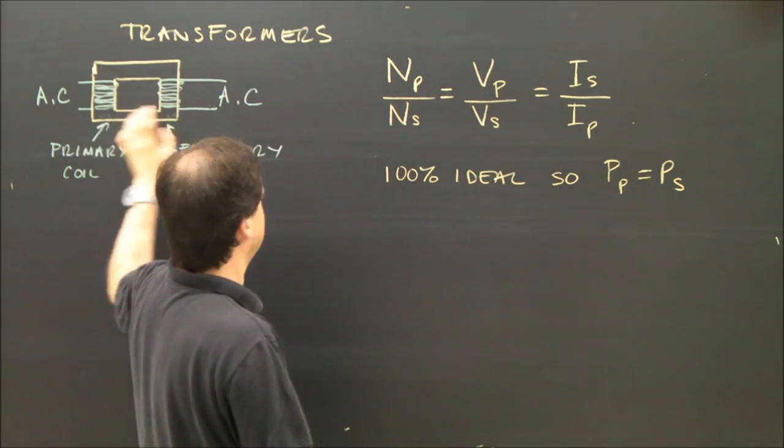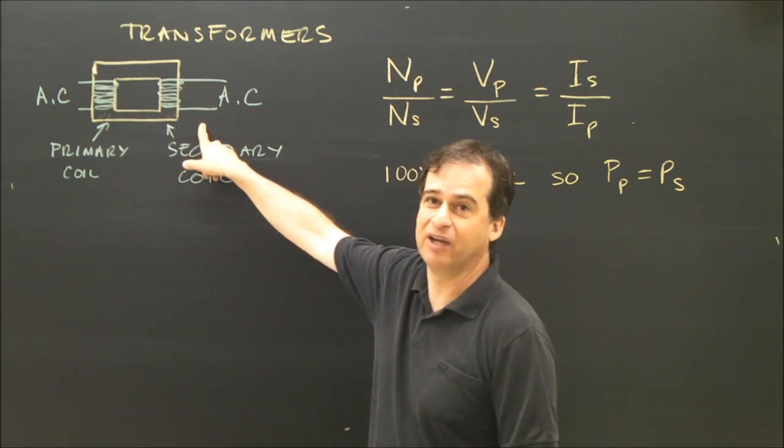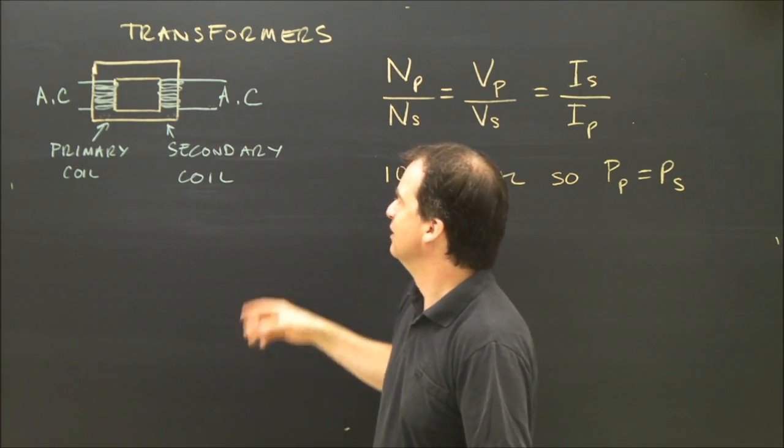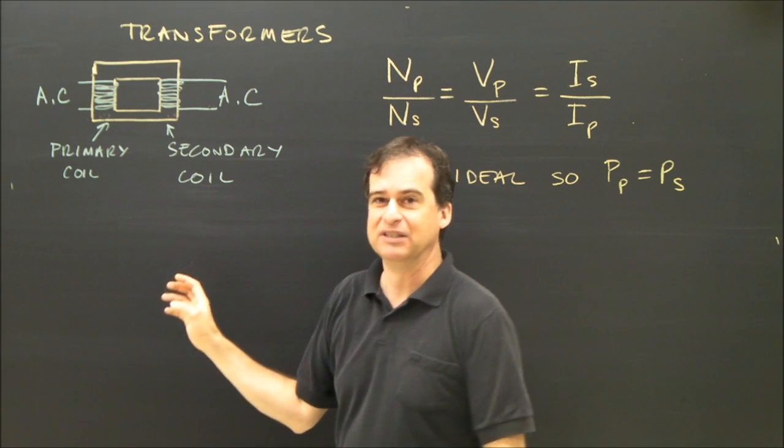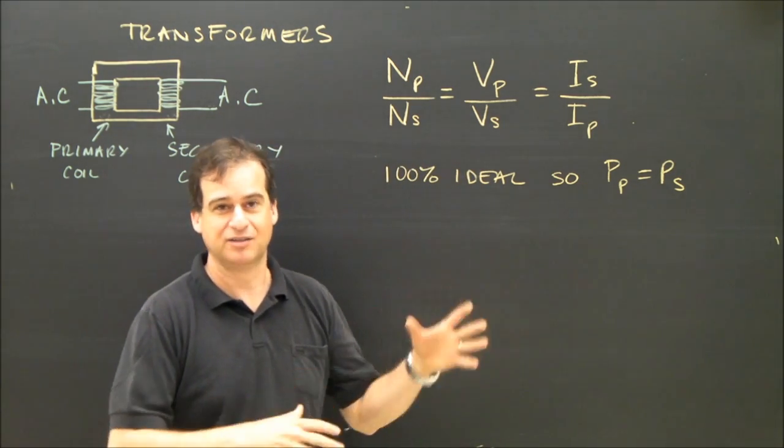And the power on this side is equal to the power on this side. So V times I here is equal to V times I here. It brings in another formula. If I give you a transformer problem, sometimes I don't give you enough information and you've got to use that other formula, P equals VI, to make it work out.